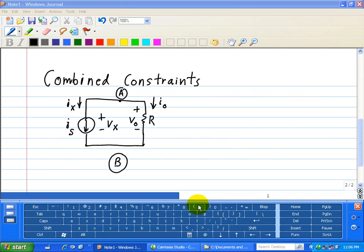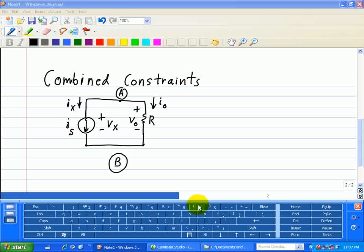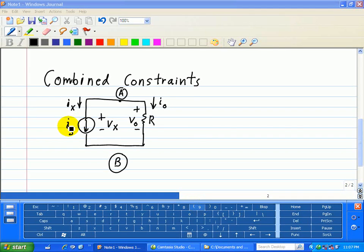Here we have a simple but important example of illustrating how we combine constraints. We have two devices: a driving source or current source IS, and a resistor R. Our unknown voltages are IX, VX, VO, and IO. So we need four equations.